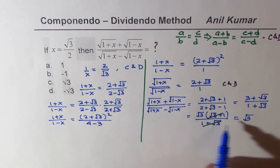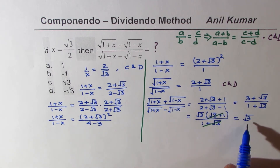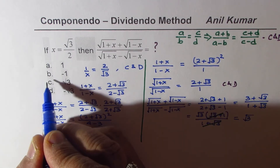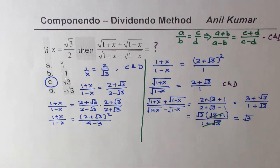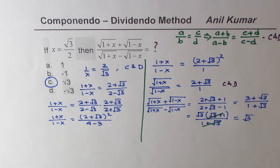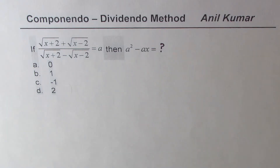So this expression equals square root 3, which is option C. That is how you answer this question — I hope the steps are absolutely clear. Let's move forward and look into the solution of the other two.